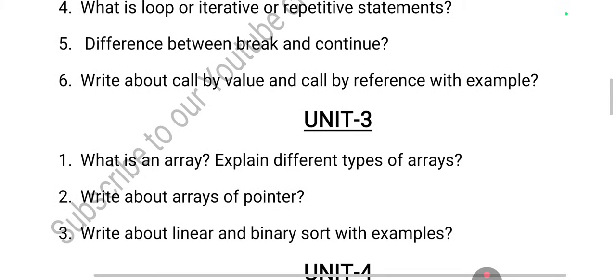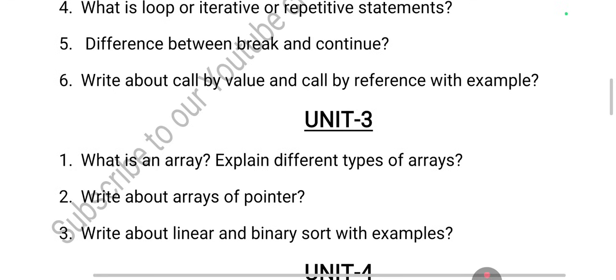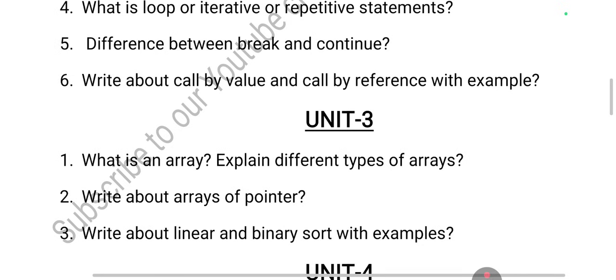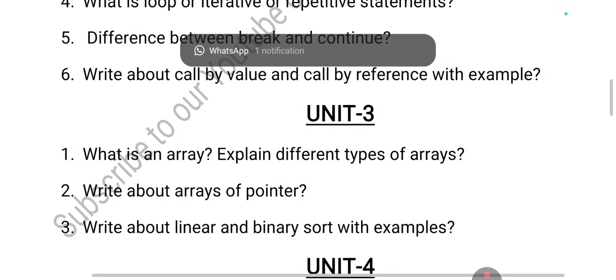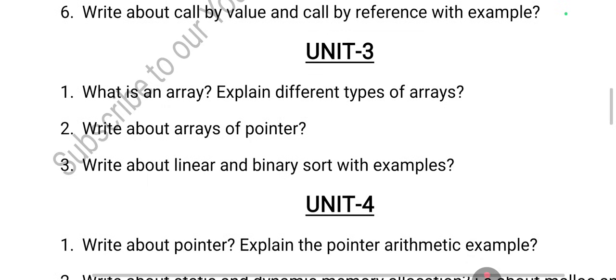Searching means finding a particular element in an array. Linear search searches from the first element to the last. Binary search works by breaking the array into two halves and comparing the target value with the midpoint: if the target is greater than the mid value, search the second half; if less, search the first half. Both linear and binary search are very important and compulsory topics.